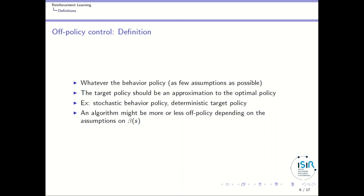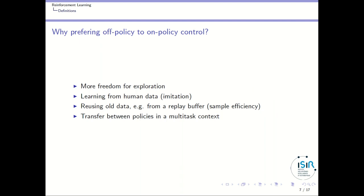One example would be learning a deterministic target policy from a stochastic behavior policy — you have a stochastic agent that explores a lot, and you want to learn a deterministic target policy that won't explore anymore. An algorithm might be more or less off-policy depending on the assumptions on the behavior policy: if the behavior policy is very close to the target policy, the algorithm is not very off-policy; if it is very different, it is very off-policy.